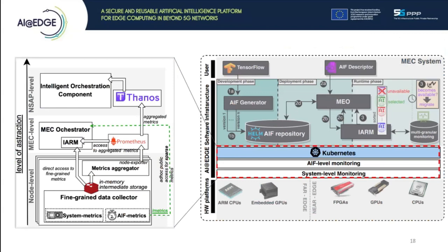Now going towards the second demo. Before the video, I would like to briefly describe the monitoring scheme used in the second scenario. It spans multiple tiers from the node to MEC and to the NSAP level. Starting from the node level, AIF-level and system-level metrics are extracted in fine granularity to support timely response for the resource management components. Those metrics are then aggregated as they are forwarded to the upper layers, to avoid high data volume overhead. We use open-source frameworks like Prometheus and Thanos, as well as custom node exporters for the accelerators.